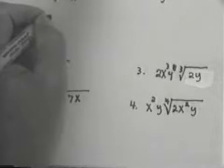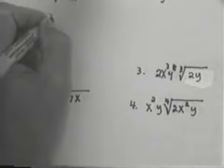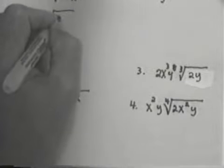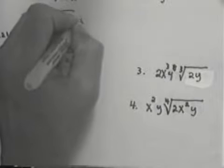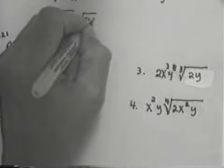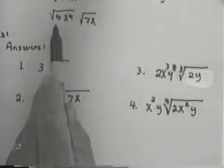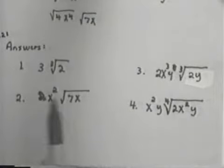2x squared, because what you do is, you break the square root of 28x to the fifth into what is the square, which would be 4x to the fourth, times what's not, which is 7x. The square root of 4 is 2, square root of x to the fourth is x squared, so it would be 2x squared times the square root of 7x. So see, you better be careful, if you disagree with these answers, it doesn't necessarily mean the mistake is yours.